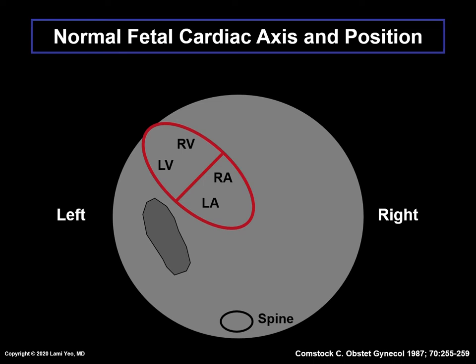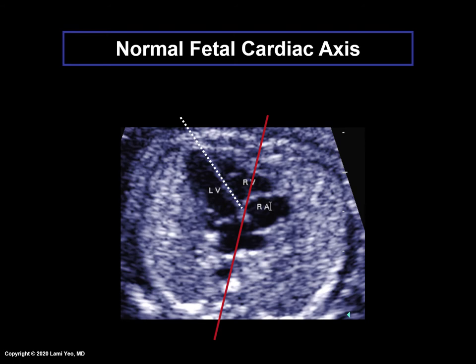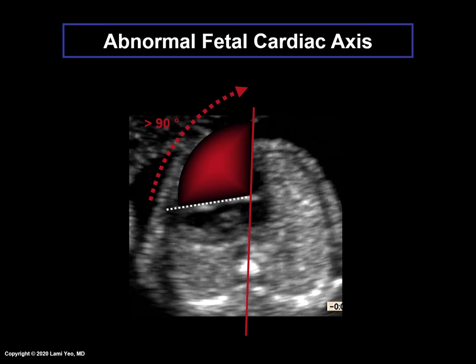Normally, the cardiac axis points to the left by 45 plus or minus 20 degrees in relation to an anteroposterior line drawn from the spine to the anterior chest wall, so that the chest is divided into right and left halves equally. The axis is the angle between a line along the ventricular septum and the anterior-posterior line bisecting the thorax. For this normal fetal heart there is a normal fetal cardiac axis of 45 plus or minus 20 degrees. In another example, the fetal cardiac axis is abnormal, greater than 90 degrees. Therefore, including assessment of fetal cardiac axis with the four-chamber view may improve the ability to screen for congenital heart disease in low-risk populations.